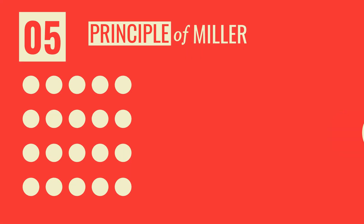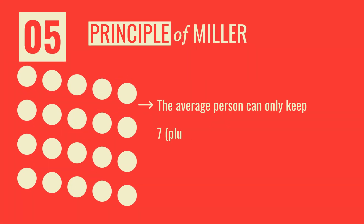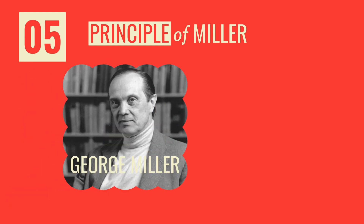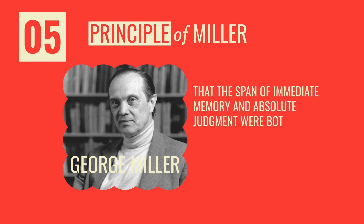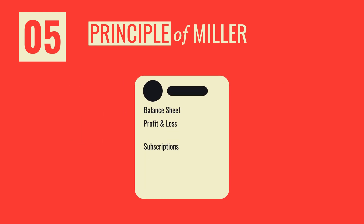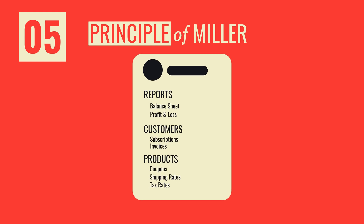Last, let's look at the principle of Miller, which states that the average person can only keep seven items in their working memory at any given time. In 1956, George Miller asserted that immediate memory and absolute judgment are both limited to around seven pieces of information. In web design, if we have a sidebar navigation with many items, we can apply this principle by grouping those items into fewer, easier-to-follow macro categories — for example, Reports, Customers, and Products — which is much easier to follow and remember.